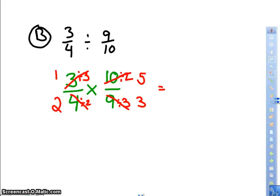So now I have 1 times 5, which is 5. 2 times 3, which is 6. Once again, I can't simplify, so that's my answer.